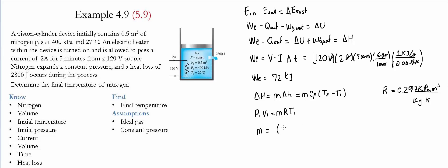The mass is the initial pressure, which is 400 kilopascals, times the initial volume, which is 0.5 cubic meters, divided by the value of the constant, 0.297 kilopascals meter cubed per kilogram Kelvin, and the initial temperature in Kelvin.